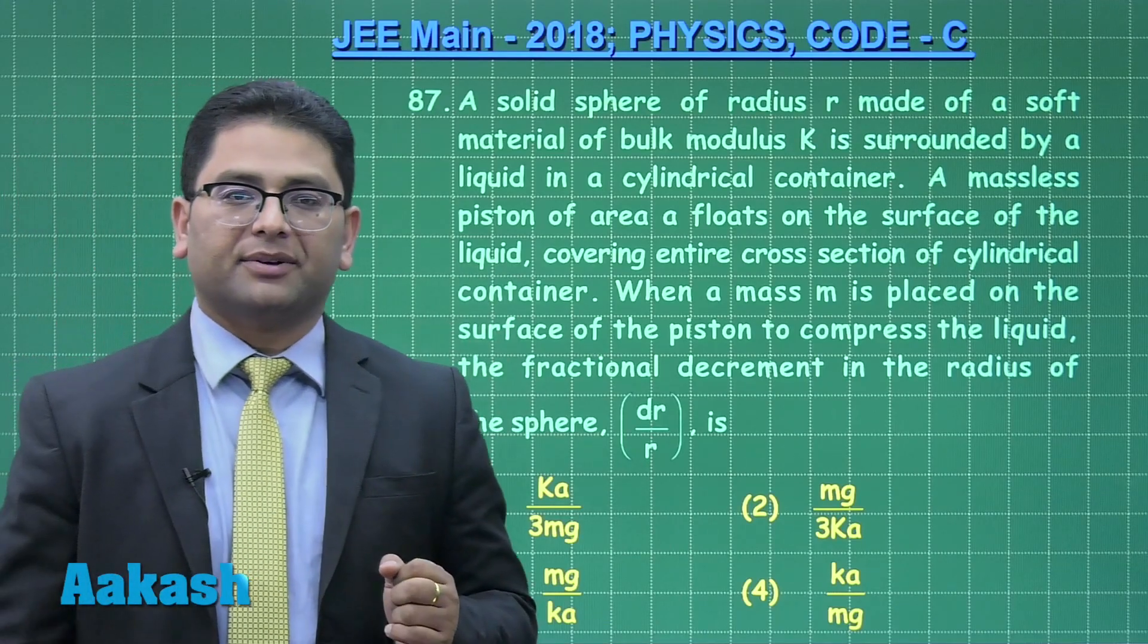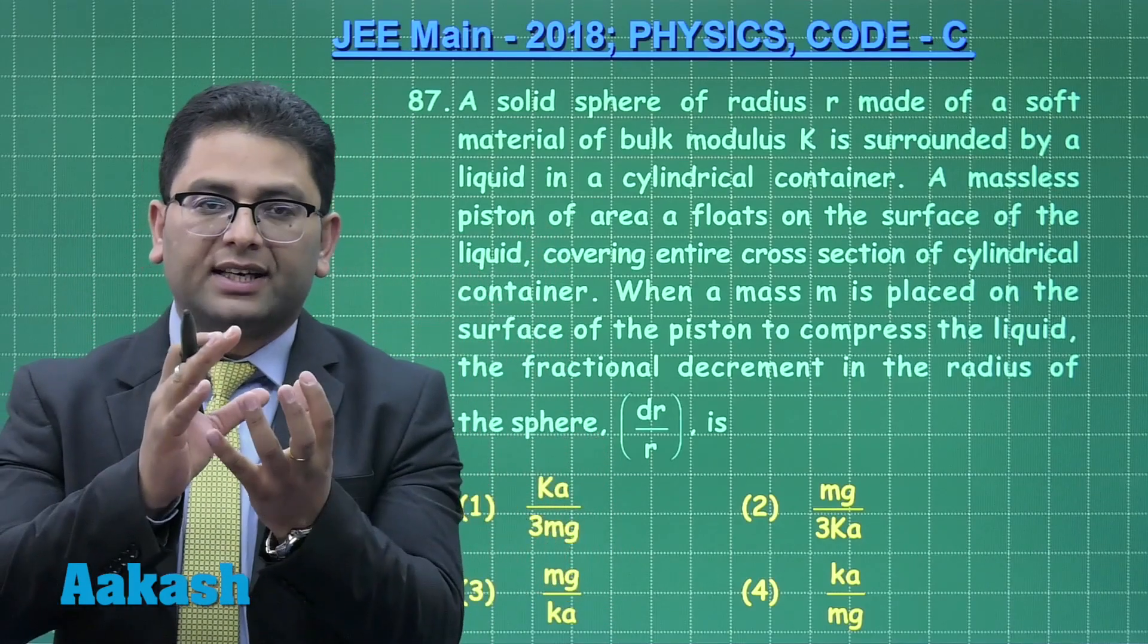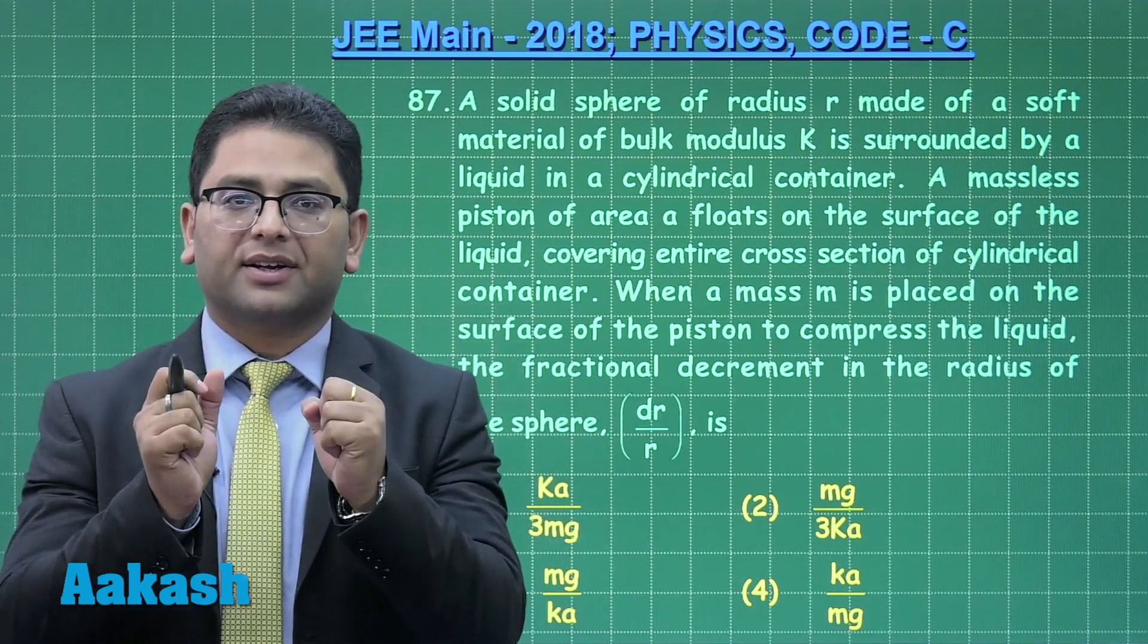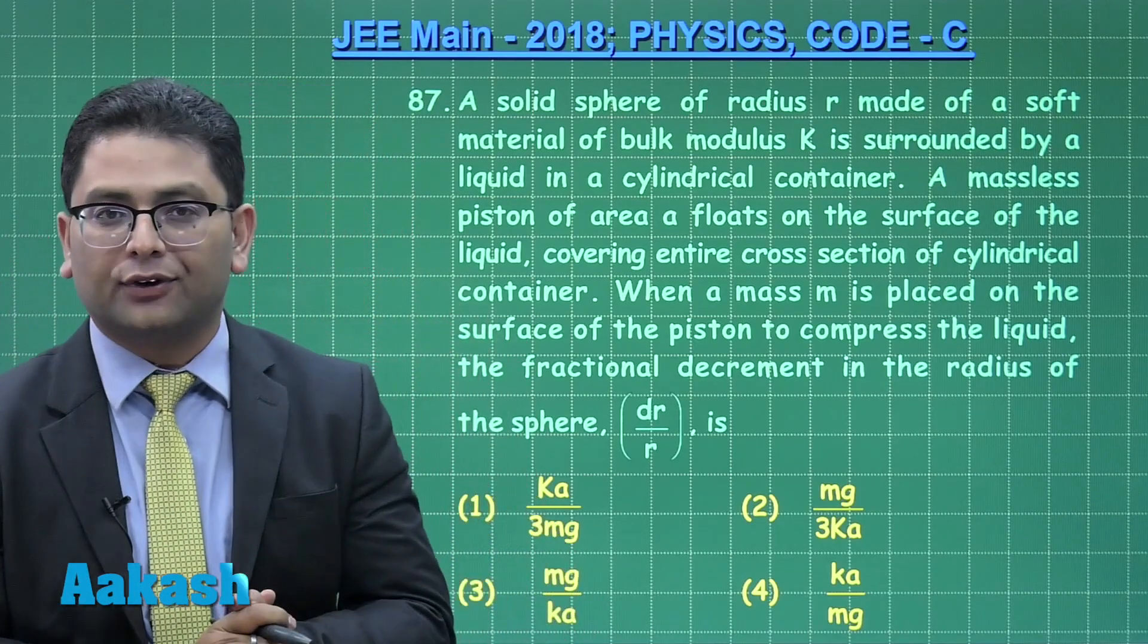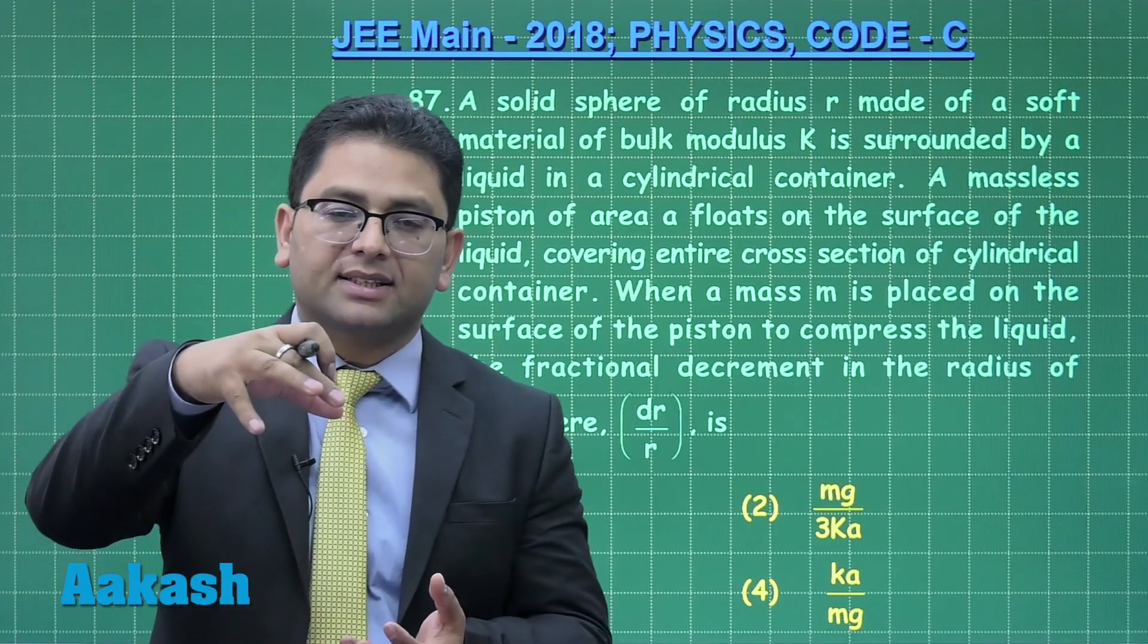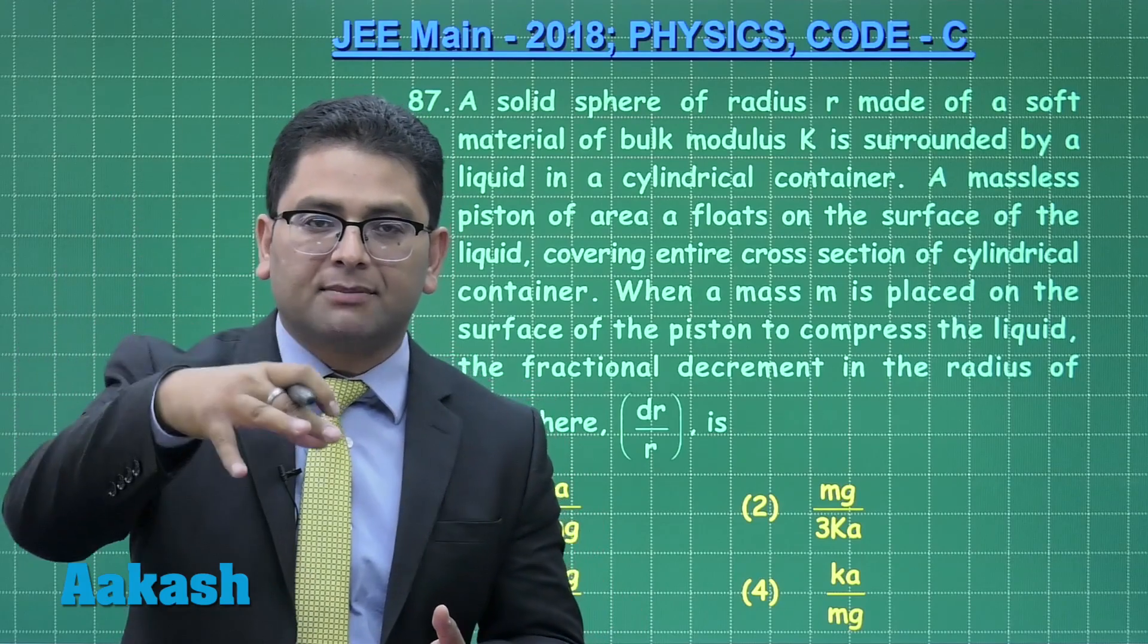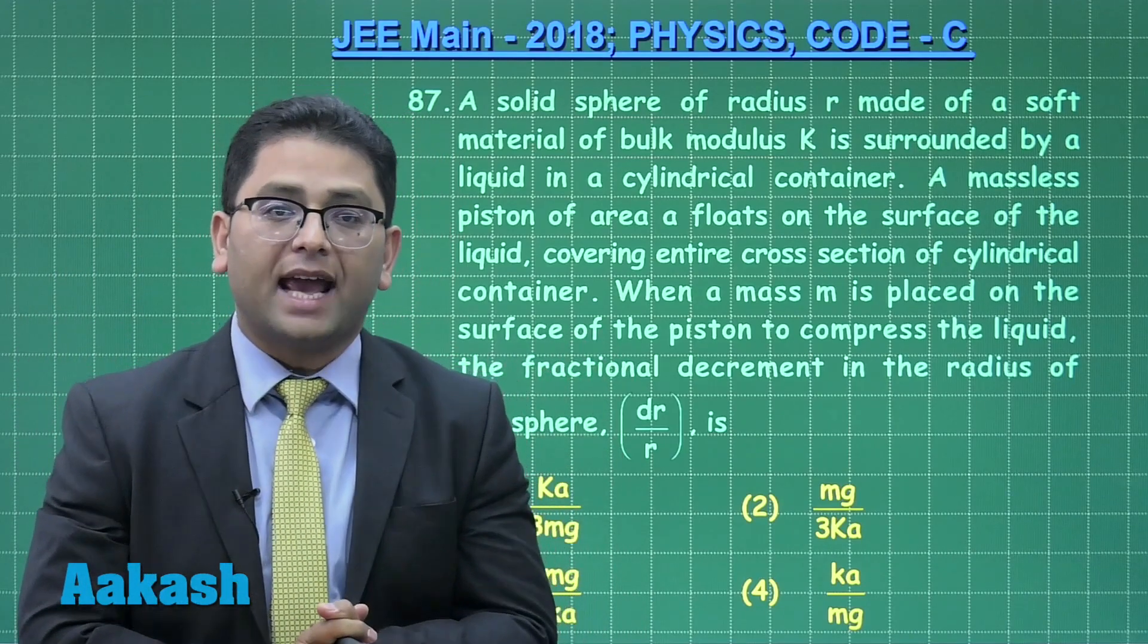Alright, question number 87. There is a cylinder and inside it there is a spherical ball with liquid surrounding. On top of that there is a massless piston which is floating, and above that piston a mass M has been placed.